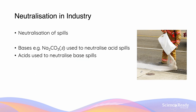When we want to neutralize an acid or a base, we need to use the opposite. So for example, if there is an acid spill, we use a base. In this case, we use Na2CO3 as our weak base to neutralize the acid. The reason we use a weak base is because the reaction between a strong acid and a strong base is highly exothermic — so we wouldn't use sodium hydroxide to neutralize HCl, for instance.